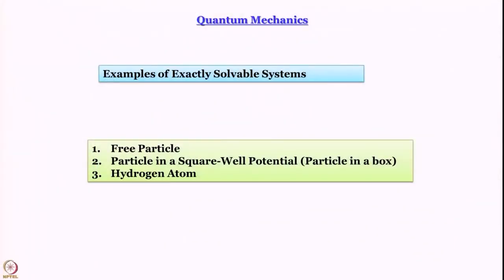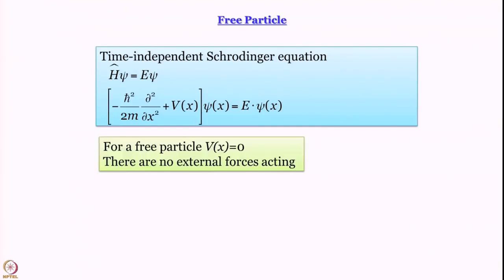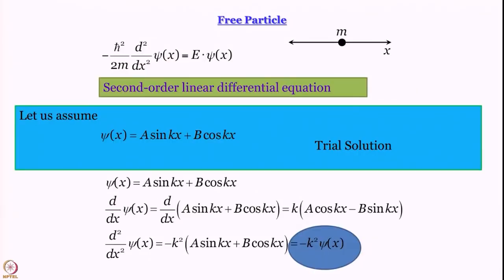We said we are going to start with exactly solvable systems — systems in which the Schrödinger equation can be solved exactly without any approximation. We started our discussion of the free particle, which is something that moves without any interaction with anything else. In the time-independent Schrödinger equation we set V(x) equal to 0 because it is a free particle that does not interact with anything else, and potential energy, if present, must arise from interaction with something. With V = 0 and no external force, this is what the Schrödinger equation reduces to, as discussed in the last module.